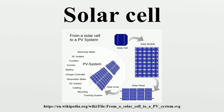By late 2011, a drop in European demand due to budgetary turmoil dropped prices for crystalline solar modules to about $1.09 per watt, sharply down from 2010. Prices continued to fall in 2012, reaching $0.62 per watt by Q4 2012. Global installed PV capacity reached at least 177 GW in 2014, enough to supply 1% of the world's total electricity consumption. Solar PV is growing fastest in Asia, with China and Japan currently accounting for half of worldwide deployment.